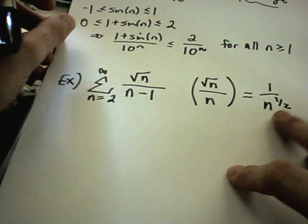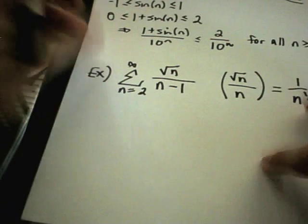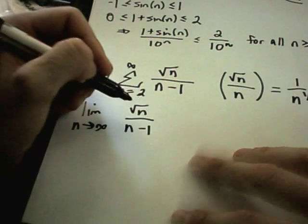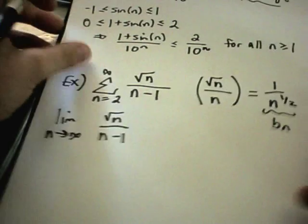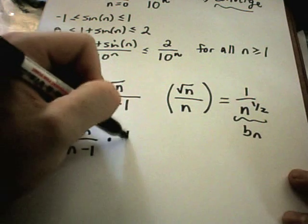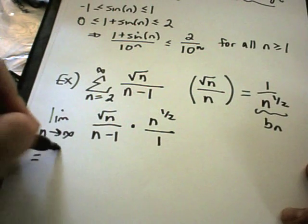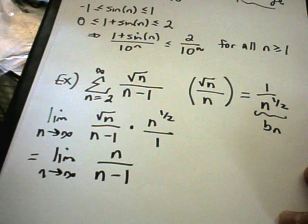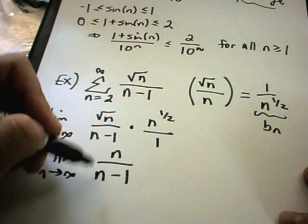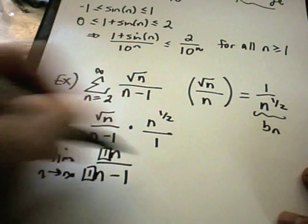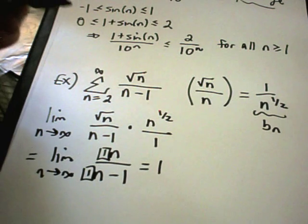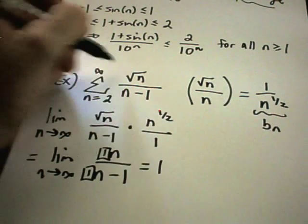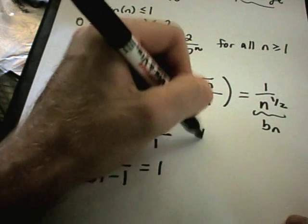The series 1 over n to the 1/2 is a divergent p-series — recall that the power must be strictly greater than 1. Using the limit comparison test, I take the limit as n goes to infinity of a_n divided by b_n. That's square root of n over n divided by 1 over n to the 1/2, which is equivalent to multiplying by n to the 1/2. This gives the limit of n over n as n goes to infinity — the highest powers match, so the ratio of coefficients gives a limit of 1. Since the limit is 1 and I compared to a divergent p-series, the original series must also be divergent.